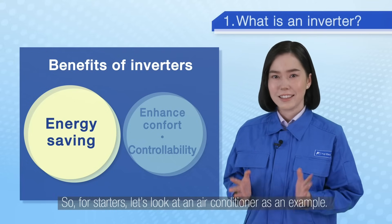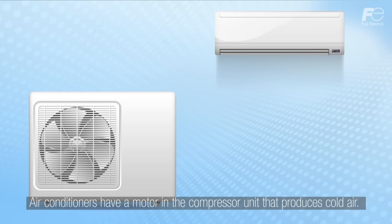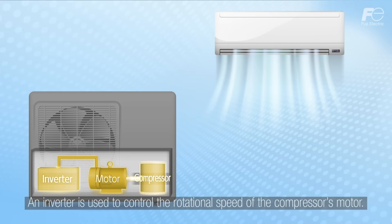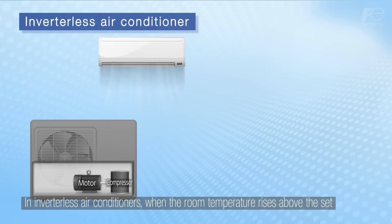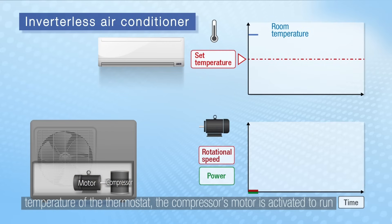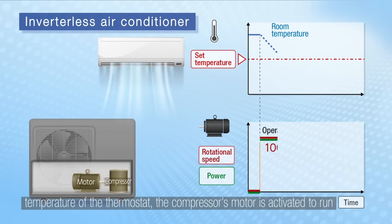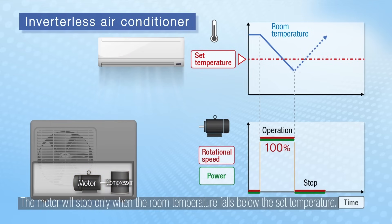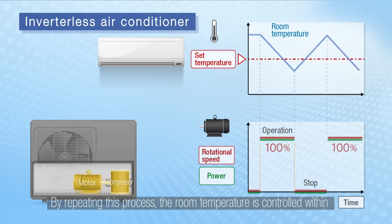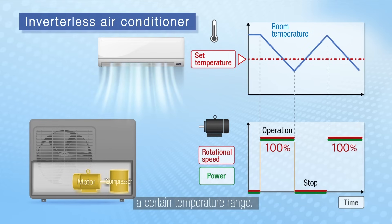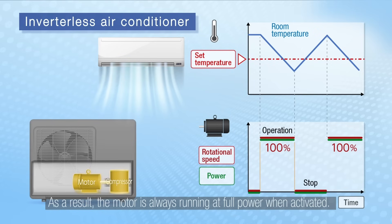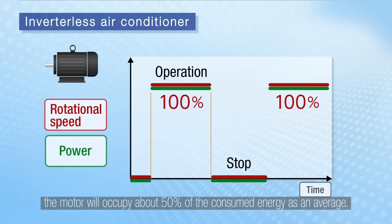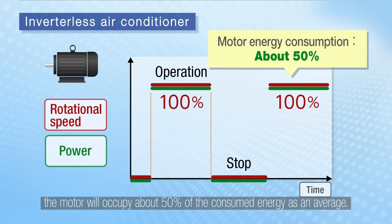For starters let's look at an air conditioner as an example. Air conditioners have a motor in the compressor unit that produces cold air. An inverter is used to control the rotational speed of the compressor's motor. In inverterless air conditioners, when the room temperature rises above the set temperature of the thermostat, the compressor's motor is activated to run at full speed to lower the room temperature. The motor will stop only when the room temperature falls below the set temperature. By repeating this process the room temperature is controlled within a certain temperature range. As a result the motor is always running at full power when activated, and if the time spent repeatedly starting and stopping the motor is equal, the motor will occupy about 50% of the consumed energy on average.